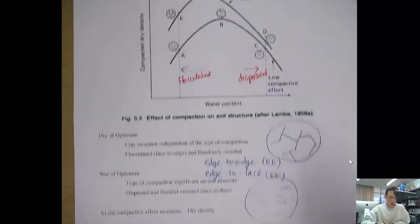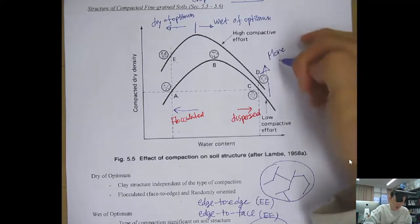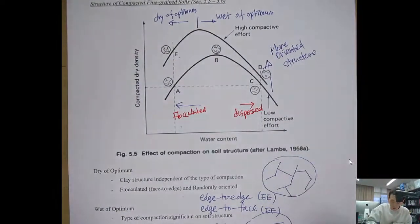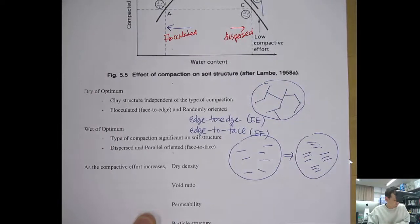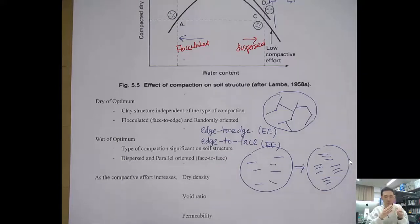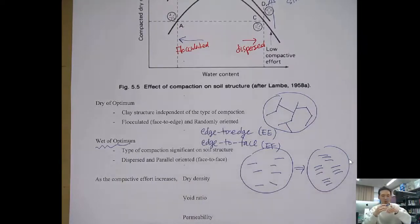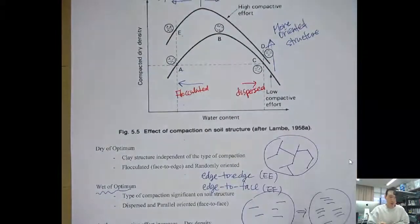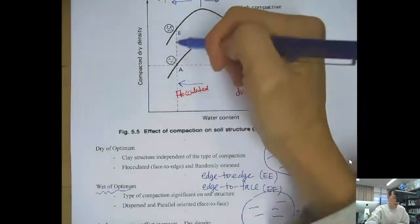With higher water content you have dispersed soil. When the compaction effort is low, and as the compaction effort increases — going to the upper side — clay particles become more oriented and aligned. The clay particle is platy, flat, so they can arrange and form a flocculated structure or be dispersed at high water content. On the wet side it's more likely to be dispersed or parallel-oriented depending on compaction effort, while on the dry side it's flocculated, but with higher compaction effort it becomes more aligned.